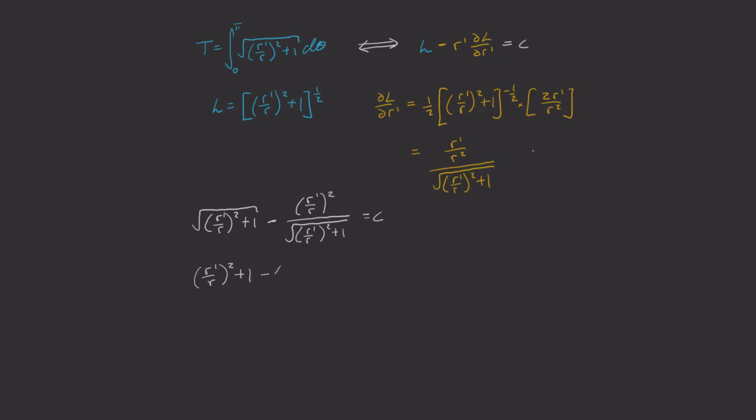To simplify this, let's multiply top and bottom of this guy by the square root term. Amazingly, these two terms in the numerator cancel, and we're left with 1 divided by this square root term is equal to a constant. Let's square and take the reciprocal. And now let's subtract 1 and the square root. Notice the right hand side is just a constant. So let's call that constant a.